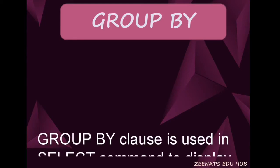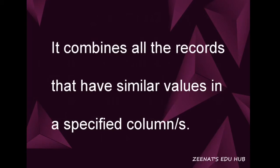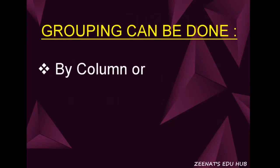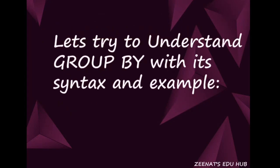GROUP BY clause is not only used to display records based on similar values in a column, but also in a group of columns. For this, it combines all the records that have similar data or values in a specified column. Grouping can be done in two ways: by column or by aggregate function. Let's understand it with its syntax and example.